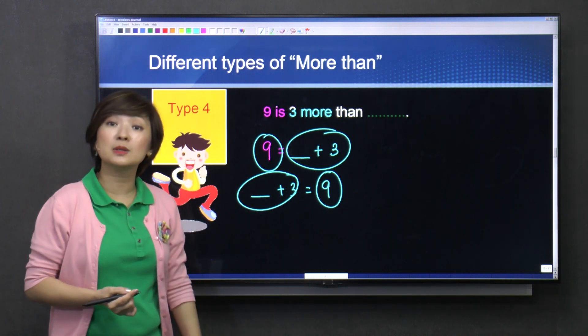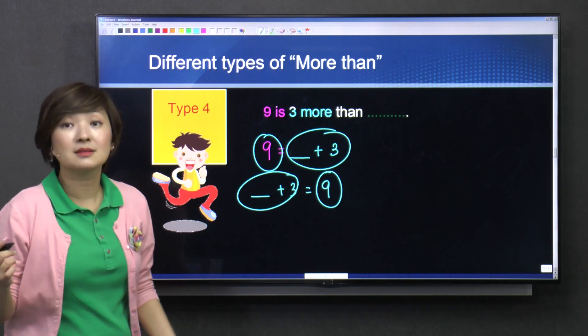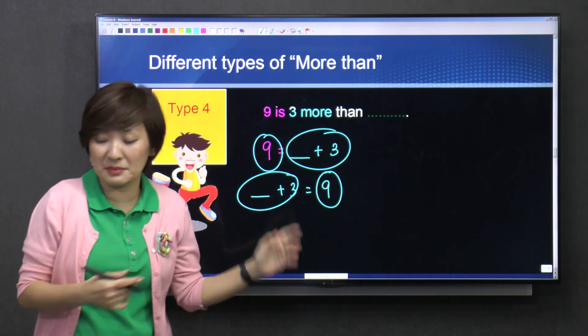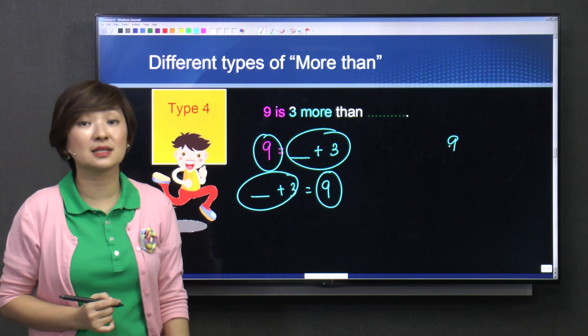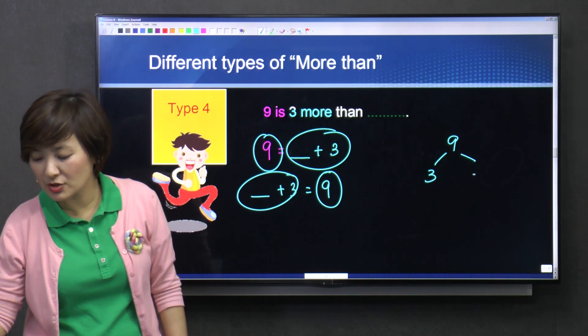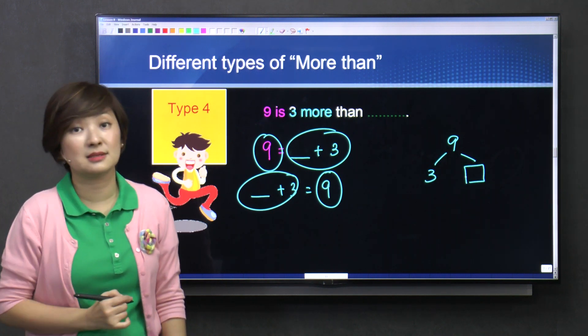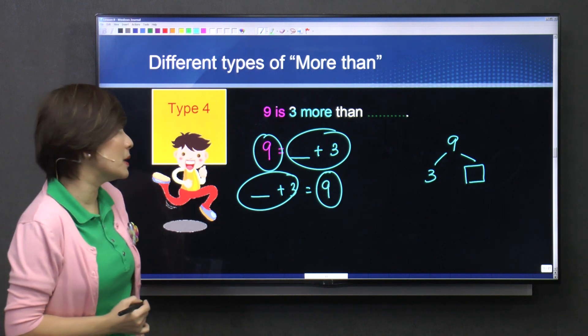So what plus three equals to nine? Here, we did it in the last segment. Nine is the total made out of two smaller numbers, three and what? Correct? So that's number bond.